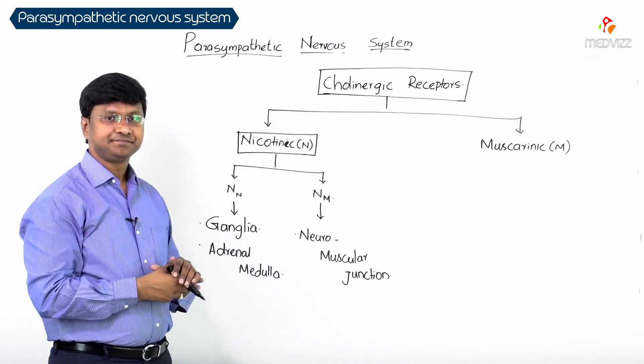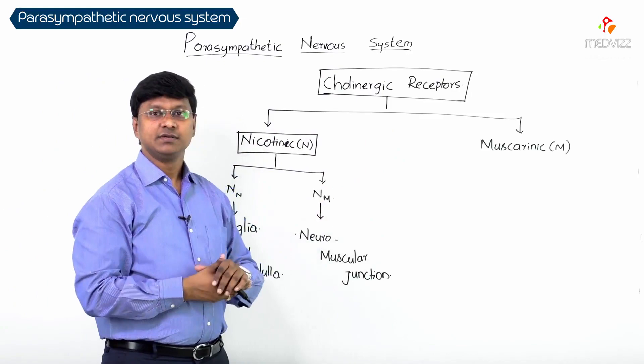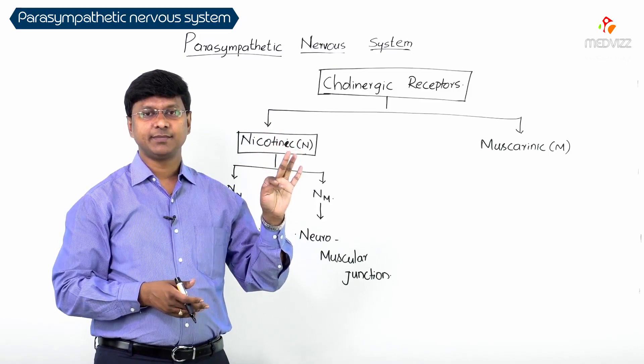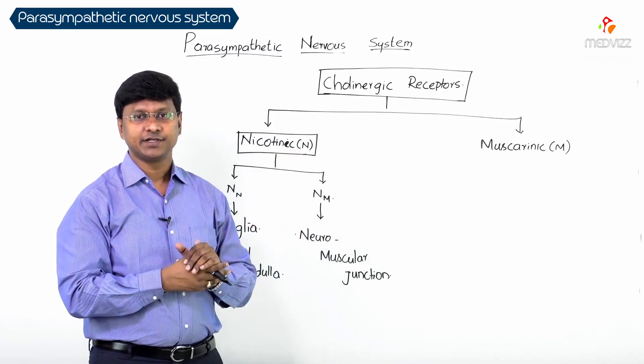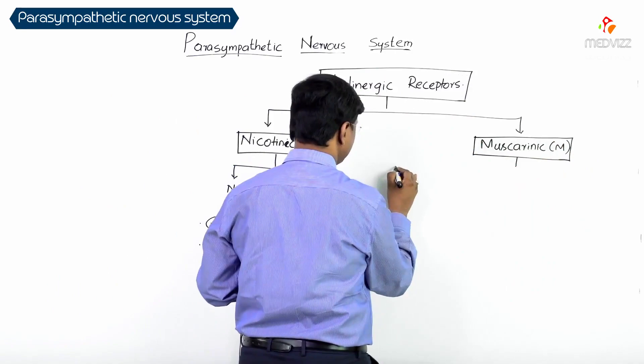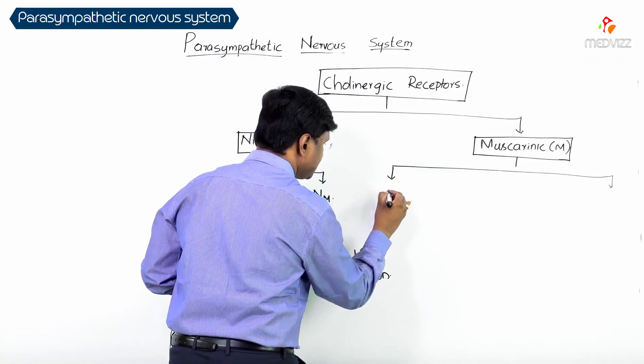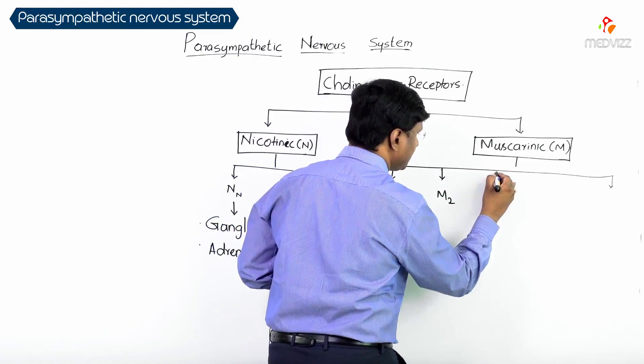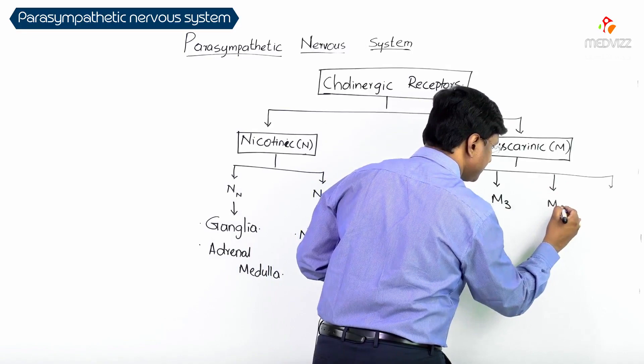Now, muscarinic receptors — remember, muscarinic receptors are of five types: M1, M2, M3, M4, and M5. Let's discuss the location of each of these receptors.